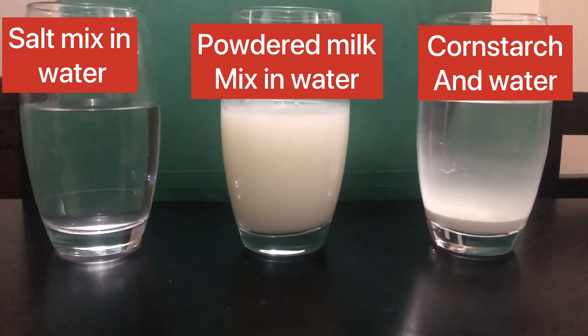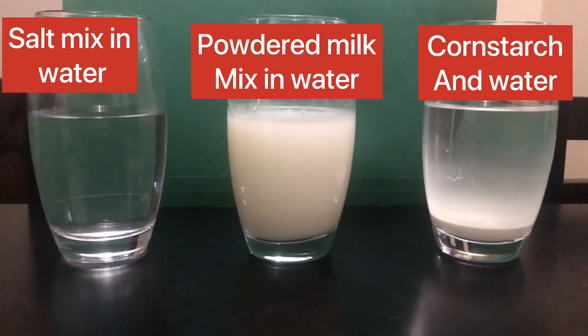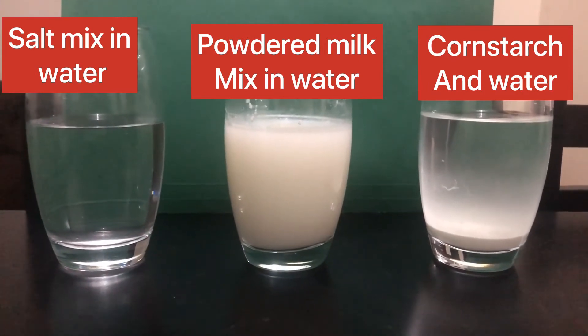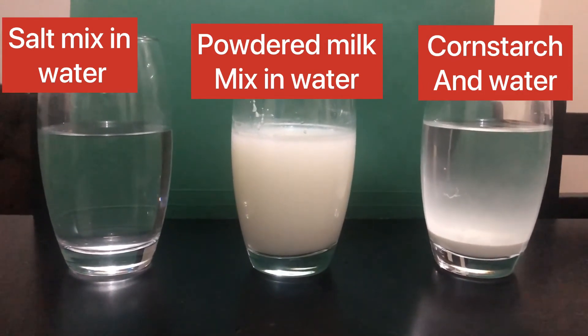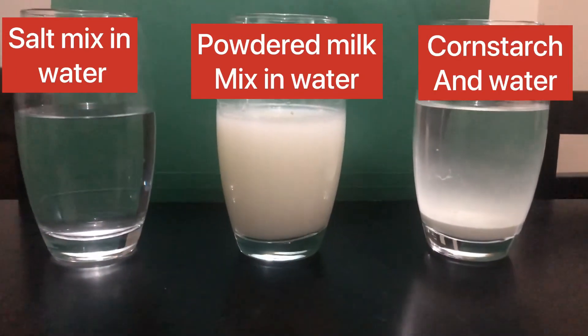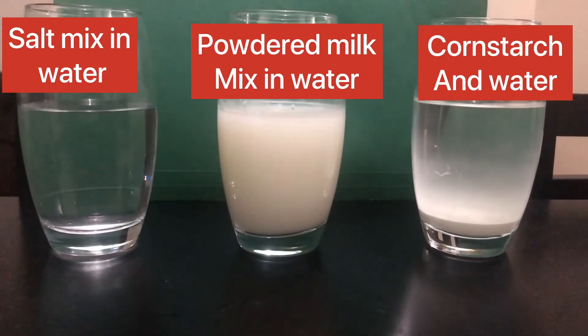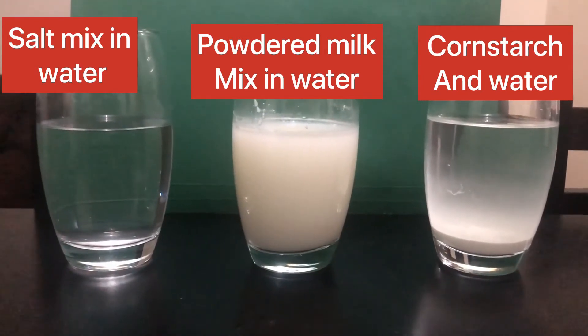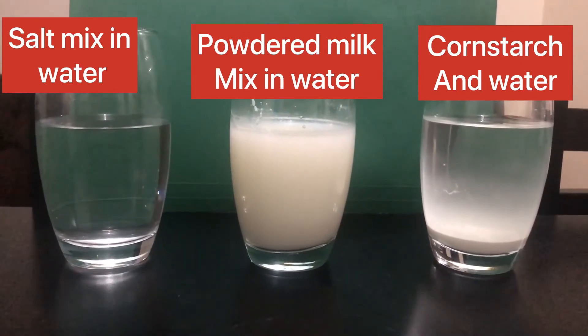While in powdered milk mixed in water, it appears cloudy. And on the third sample of mixture, the cornstarch mixed in water, it does not have a uniform appearance. We can still see the components of this mixture, which is the cornstarch that settles at the bottom, and the water.